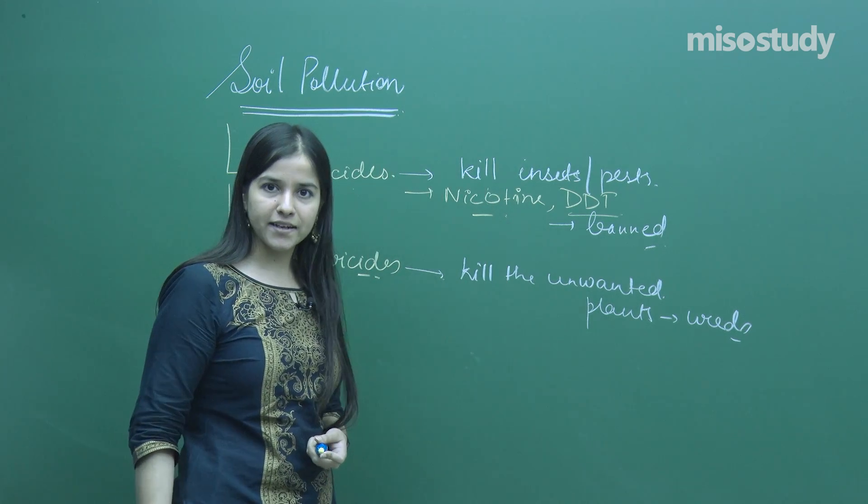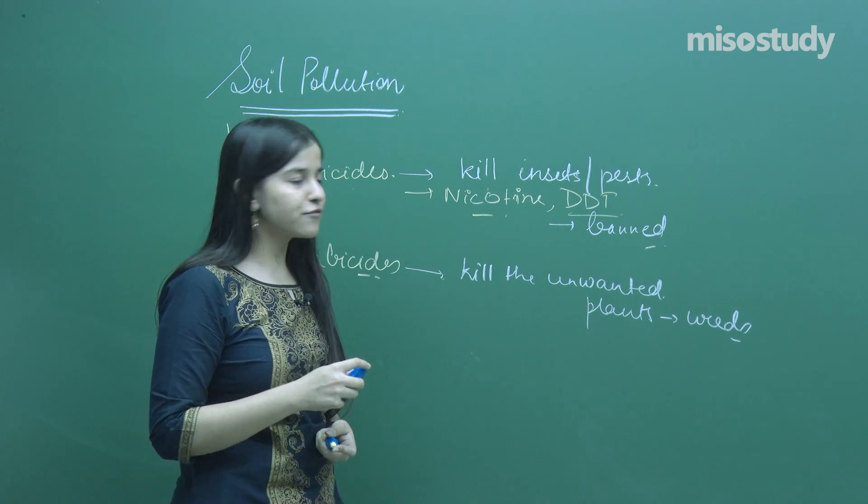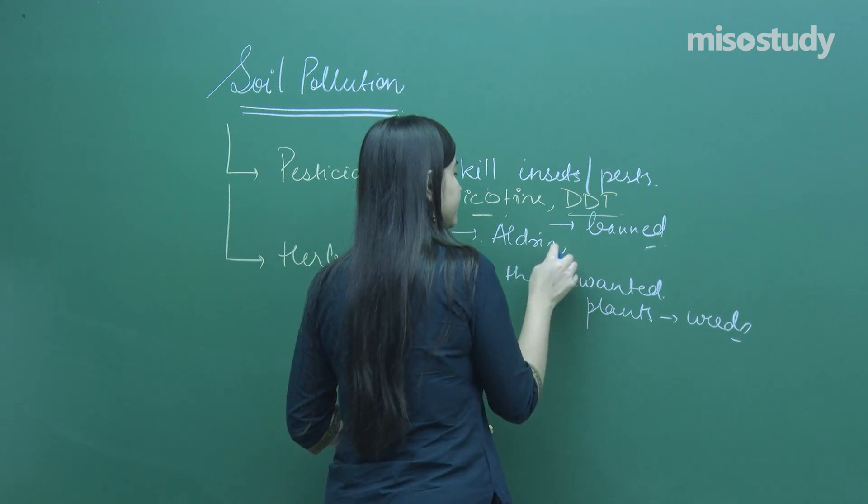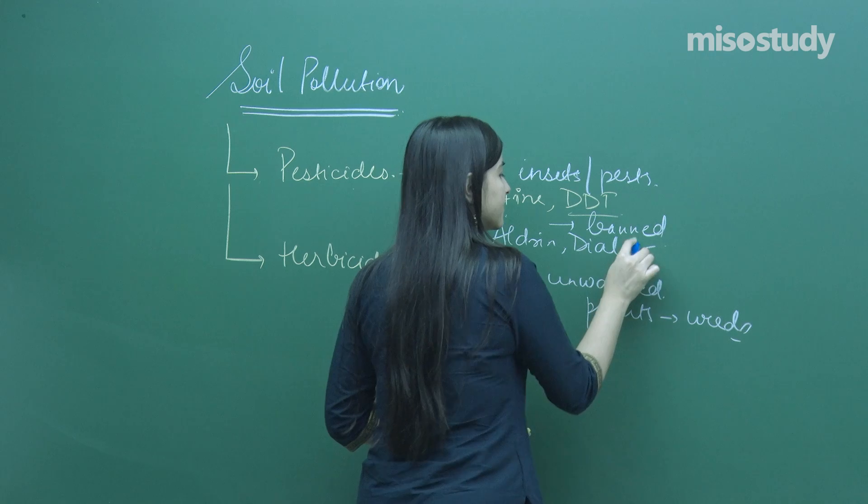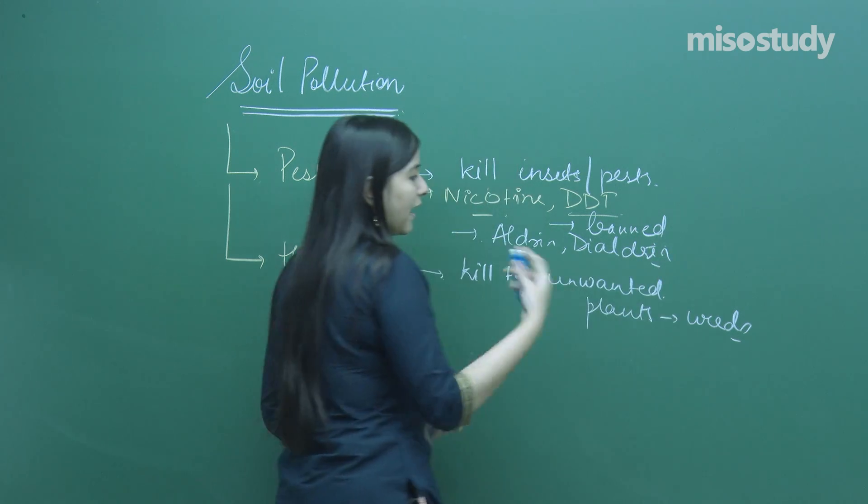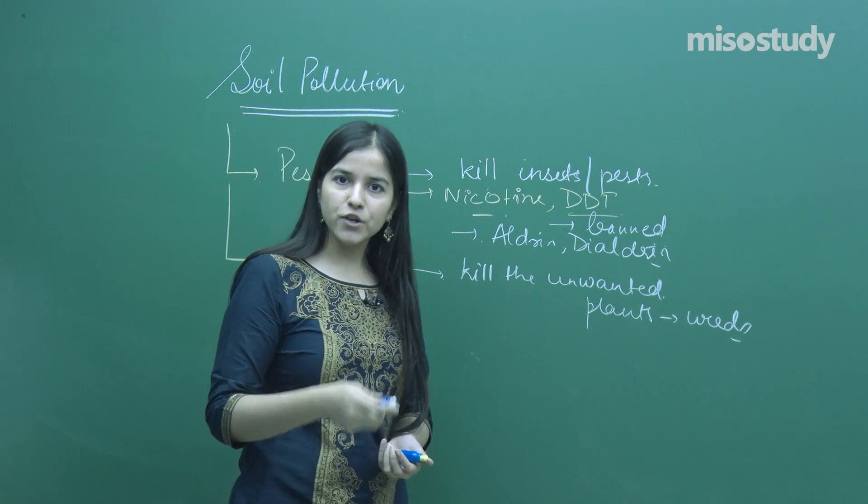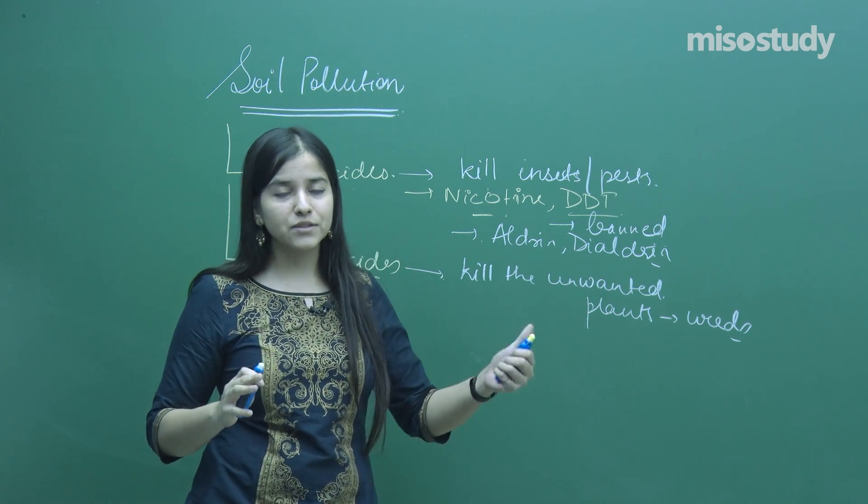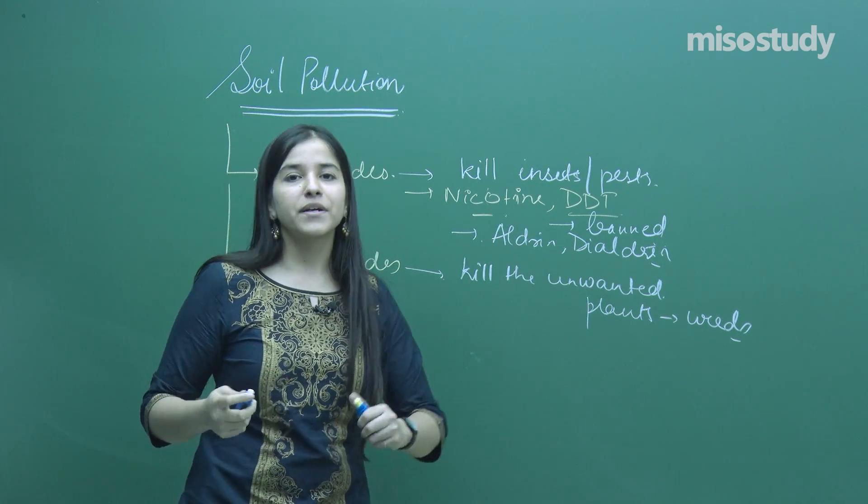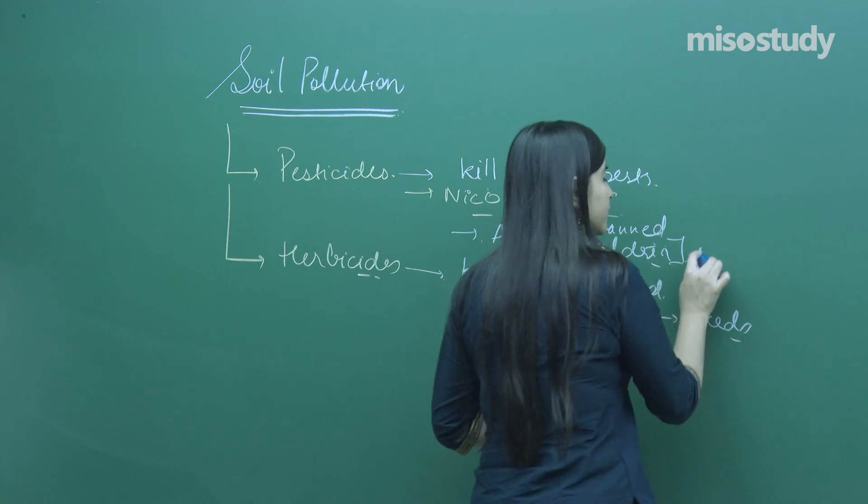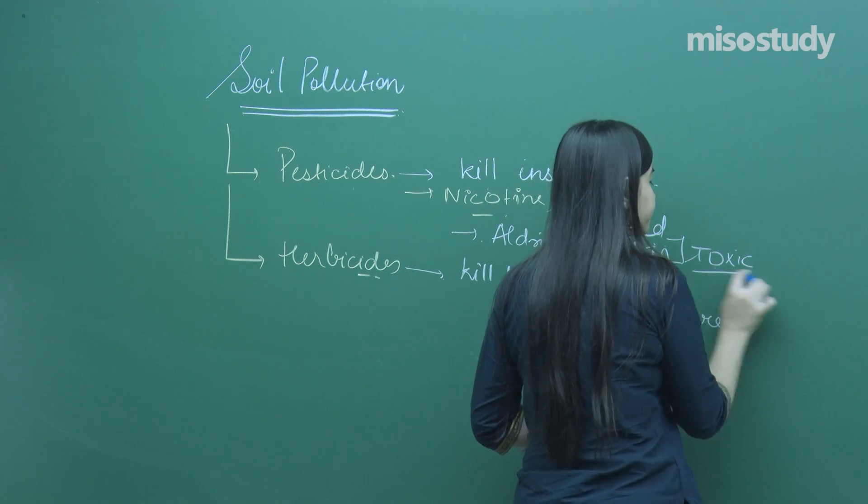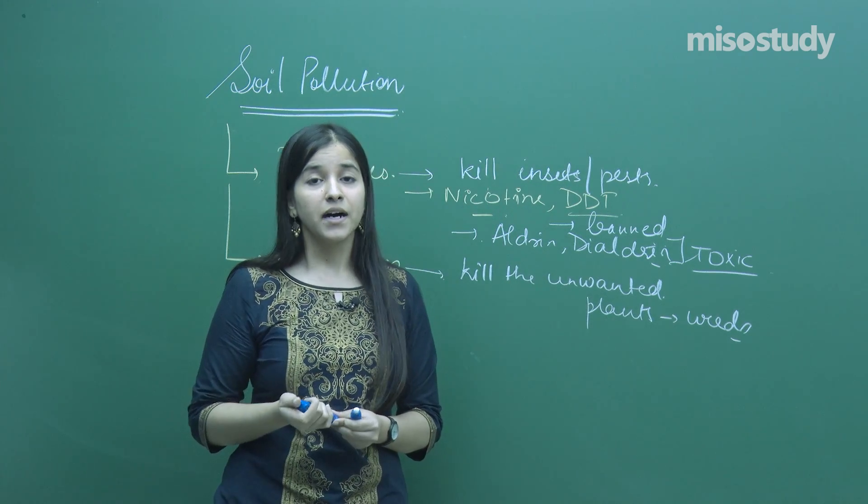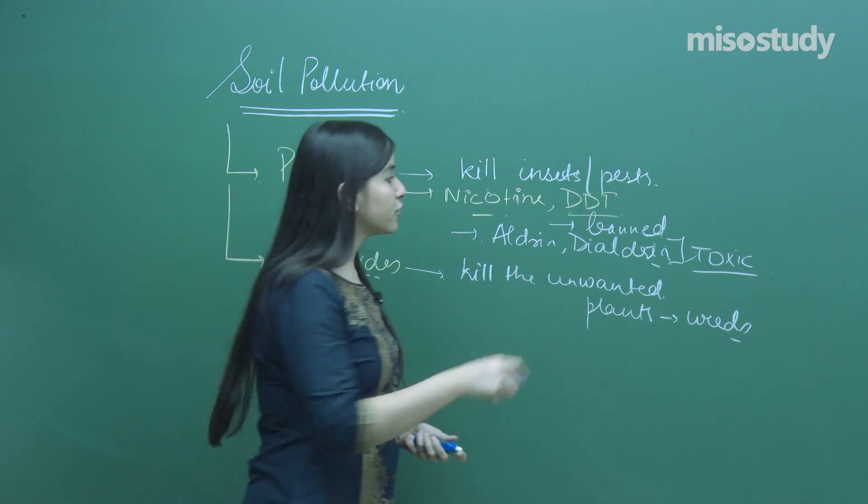Now certain alternatives are there. Many alternatives have been found, including aldrin and dialdrin. These chemicals were commonly used as pesticides, but again they were toxic to human beings.